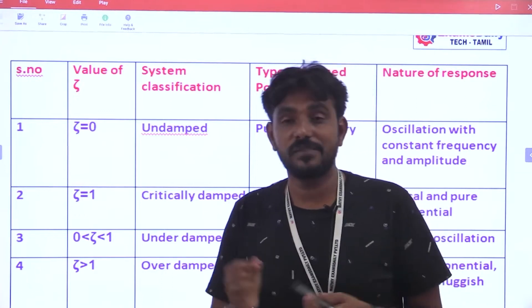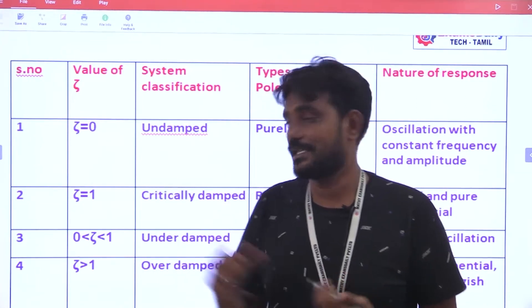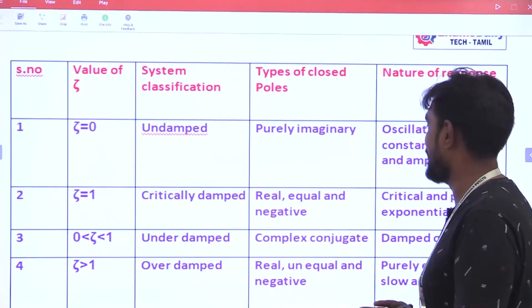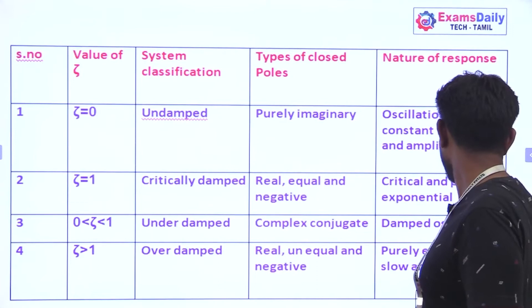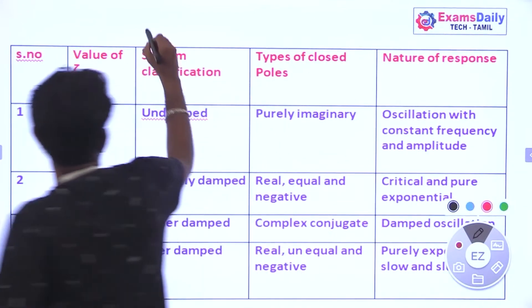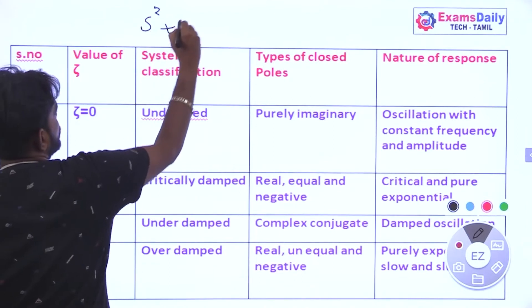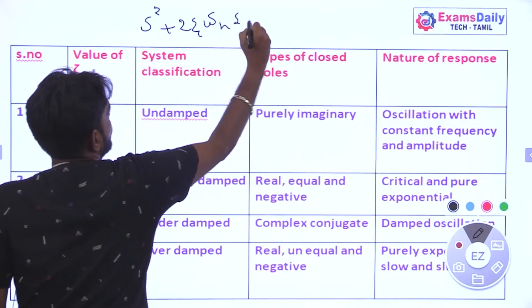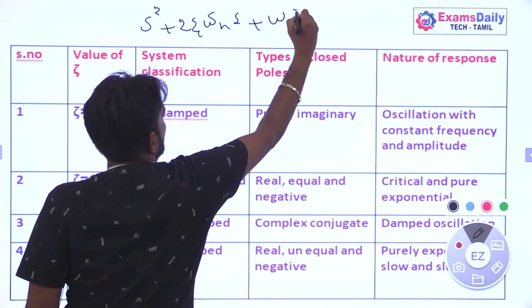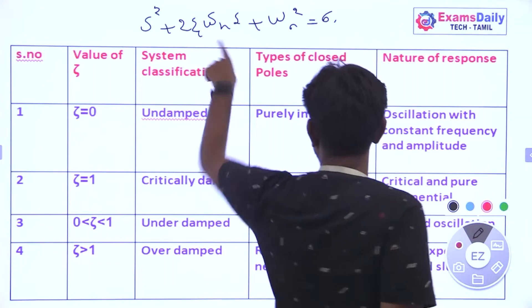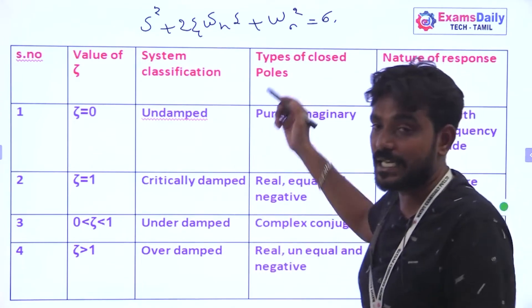From the Damping Ratio, we can also find the natural frequency of oscillation. The standard second-order system formula is: S squared plus 2·ζ·ωn·S plus ωn squared, where ωn squared gives the natural frequency of oscillation and ζ (zeta) is the Damping Ratio.